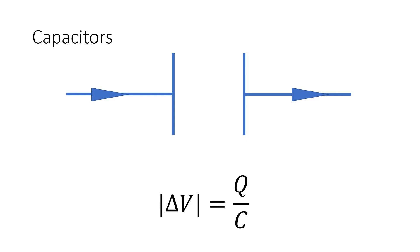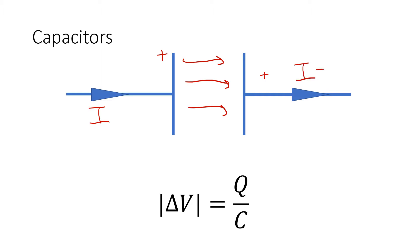What a capacitor does is it effectively stores energy. How it works is: if current is going to the right, since current is defined as the flow of positive particles, a positive charge will build up on one plate. It'll interact through electric fields to push out positive charge on the other side to make current flow that way again, leaving a negative charge on that plate.